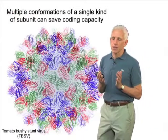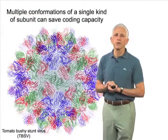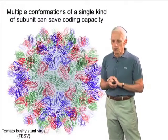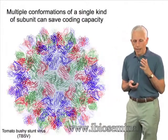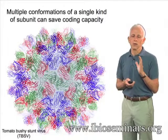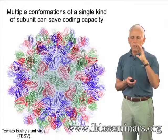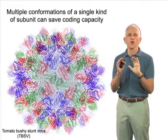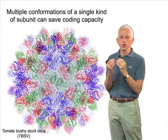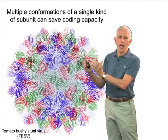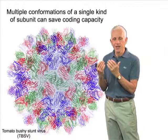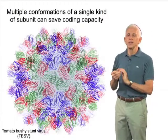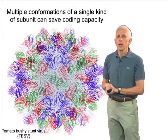The same size of package can be achieved with a single kind of subunit, if that subunit can have multiple conformers. Icosahedral symmetry requires that there be 60 and only 60 identical structures that form an icosahedral asymmetric shell, so if you want to use 180 protein subunits, as in the picornaviruses, either they have to come in three chemically distinct kinds — three colors if you wish — or they need to have three distinct conformers.